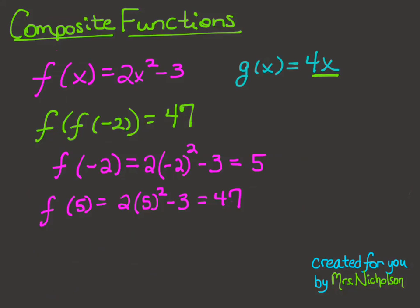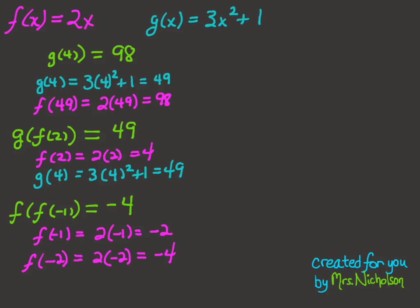Pause the video and take a moment to try the next example on your own. In this next example, for the first composite calculation you should have gotten 98. For the second one, g of f of 2 was equal to 49. And for the last one, f of f of negative 1, you should have gotten negative 4.